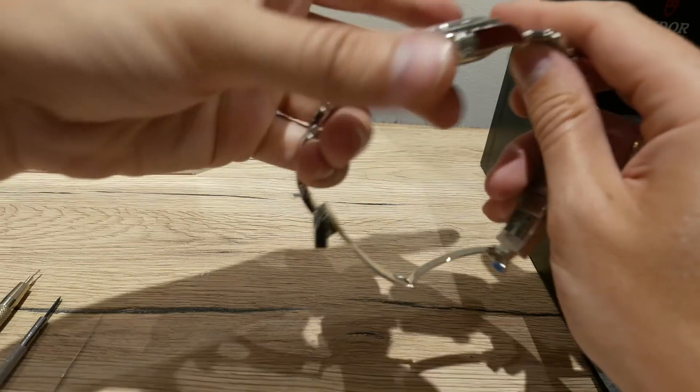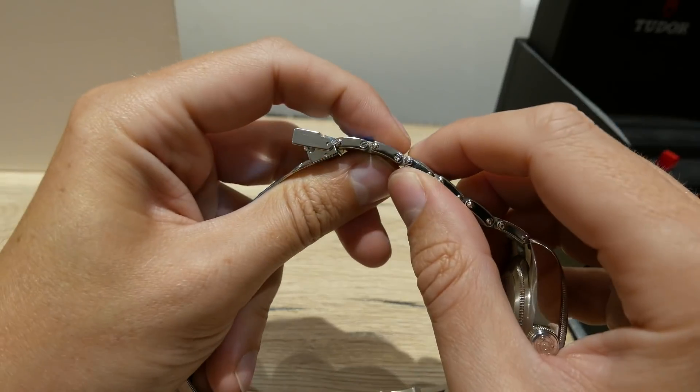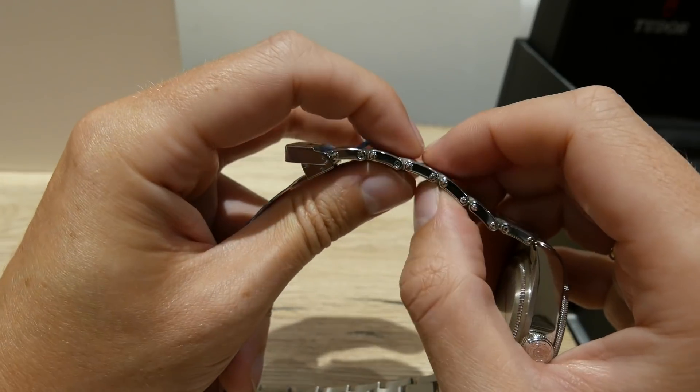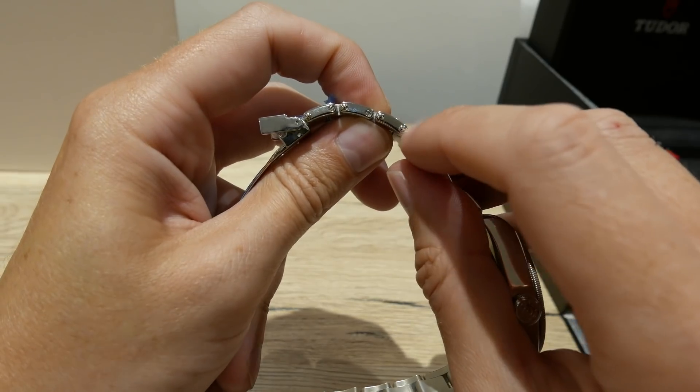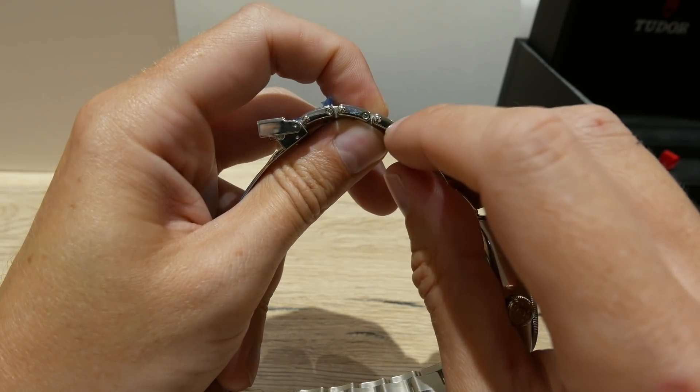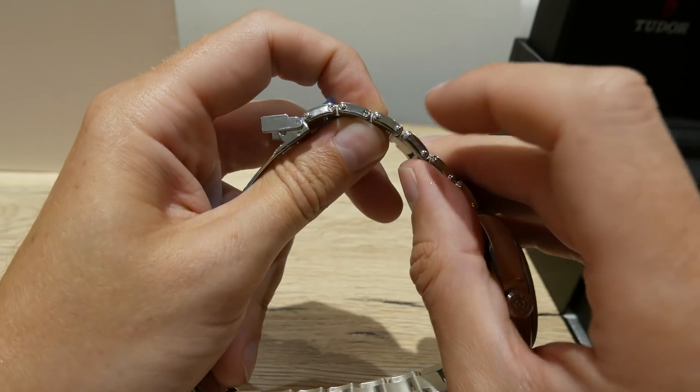But if I go to remove those two links, there's a slight issue. So this link here, this third link along is just a rivet type, there's basically no screws to remove there, that's just a fixed link.